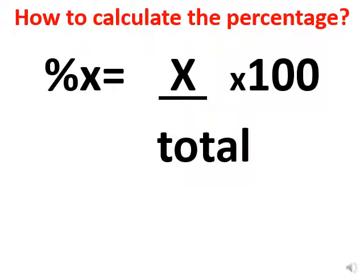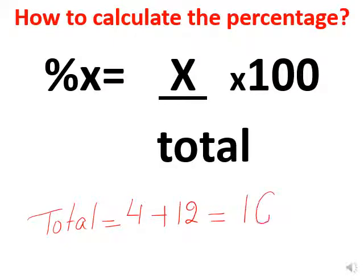To calculate the percentage, the general formula is: percentage of x = (x / total) × 100. Here x can be the gray flies or the black flies — it's the number of that type over the total. In this exercise the total is 12 gray + 4 black = 16.